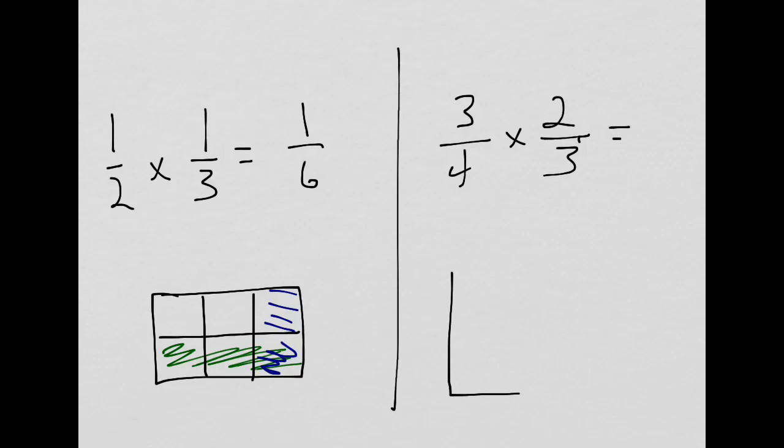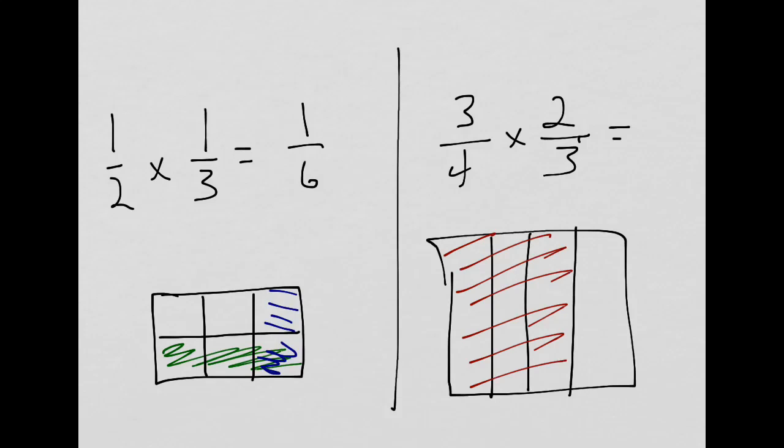Again, let's draw it. I'm just going to draw my hole a little bigger here so I can draw fourths. 3/4 would be represented like this. Now, what is 2/3 of that? It's like 2/3 of a copy of 3/4. So I've now divided it into thirds going the other way. 2/3 would be shown like this.